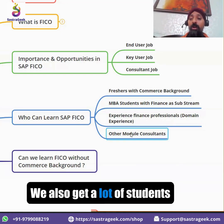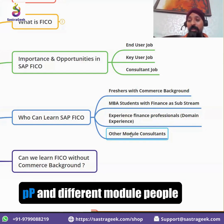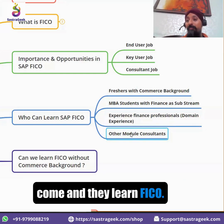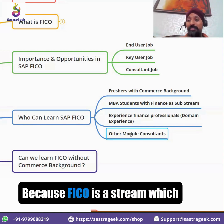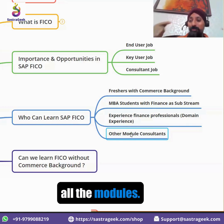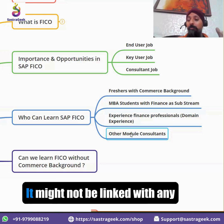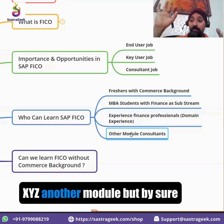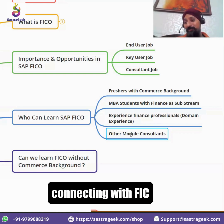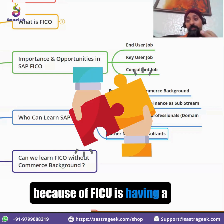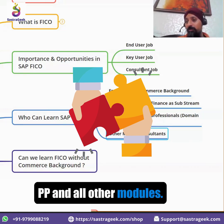We also get a lot of students from other modules — MM, SD, PP — and people from different modules come and learn FICO. Why? Because they want to cross-train, since FICO is a stream that gets connected with all the modules. Any module in SAP, by default, would be connecting with FICO because of FICO's strong integration with SD, MM, PP, and all other modules.